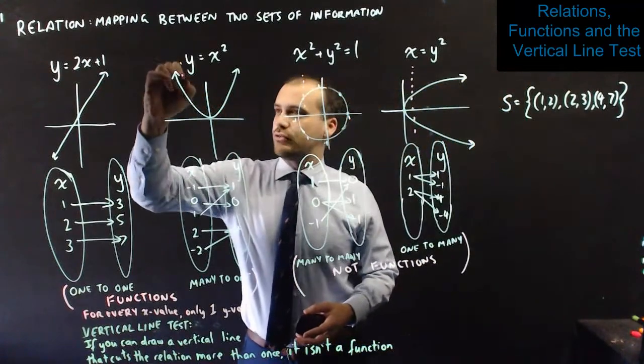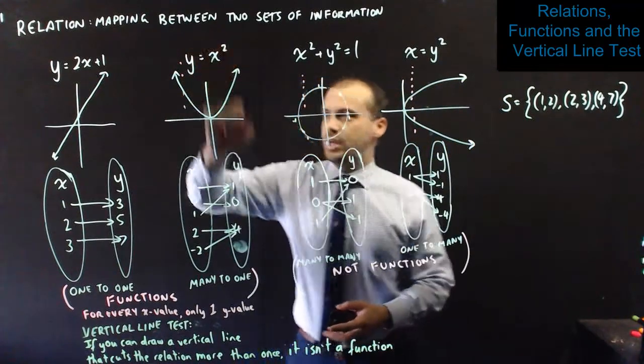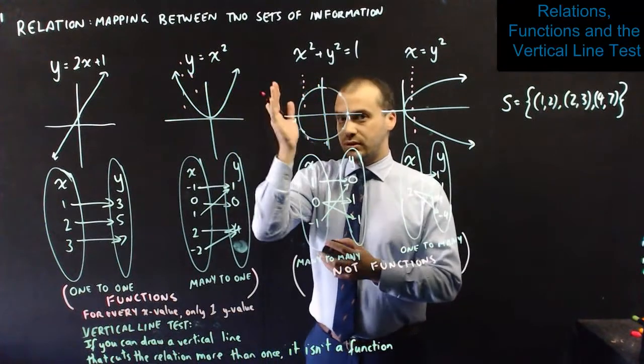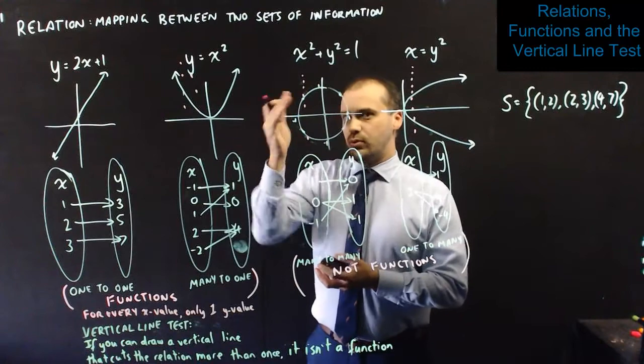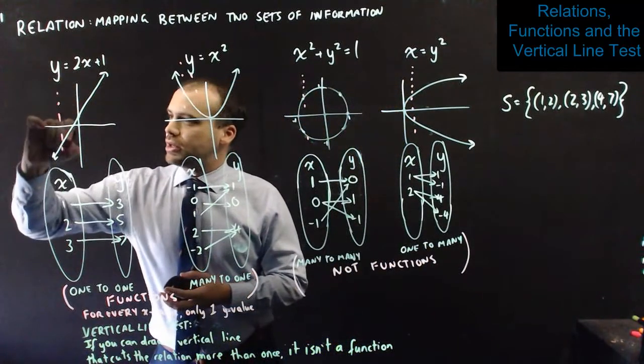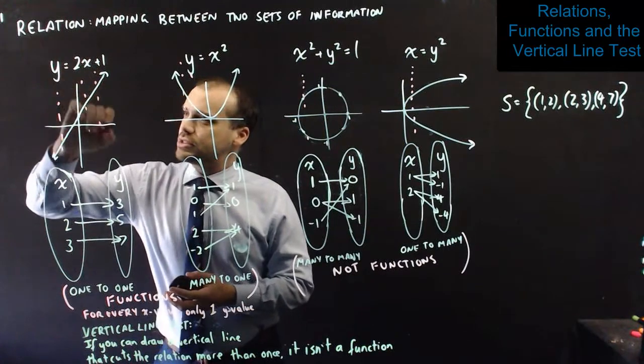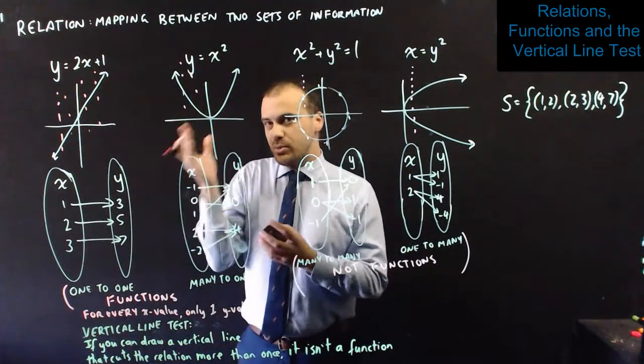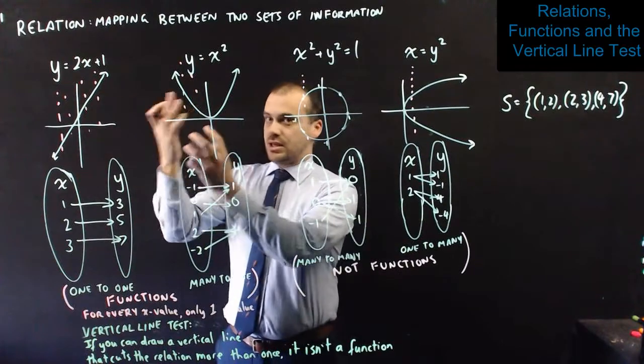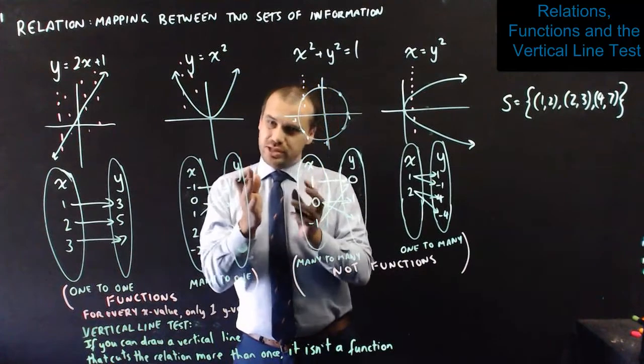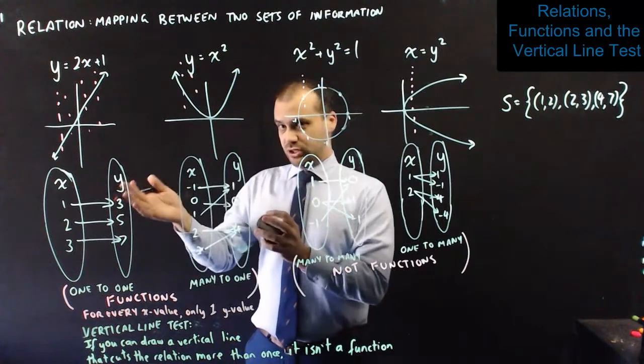Now, with this one, I can draw vertical lines anywhere I want. Anywhere I want. Hundreds of them. And, I'll never cut the relation more than once. Therefore, it is a function. And, this one, I can draw as many vertical lines as I want. And, I will never find a place where I can cut it more than once. Therefore, it is a function. That's the vertical line test. Draw vertical lines. Try to cut it twice. If you can't, it's a function.